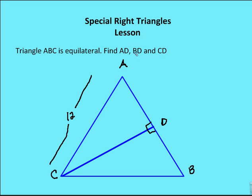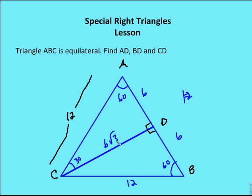Triangle ABC is equilateral. Find AD, BD, and CD. Since ABC is equilateral, AC is 12, CB is 12, and AB is 12. If it's equilateral, all angle measures are 60 degrees. With the altitude drawn, I know the angle at D is 90, so I'm left with a 30-60-90 triangle. My hypotenuse is 12, the side opposite the 30-degree angle is 6, so AD is 6, BD is 6, and CD is 6-root 3 based on the 30-60-90 family triangle relationship.